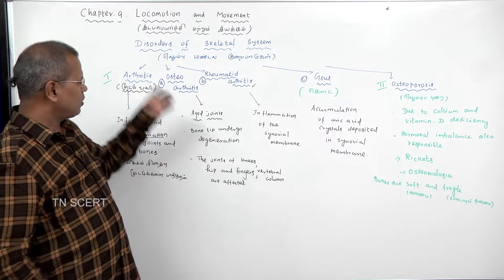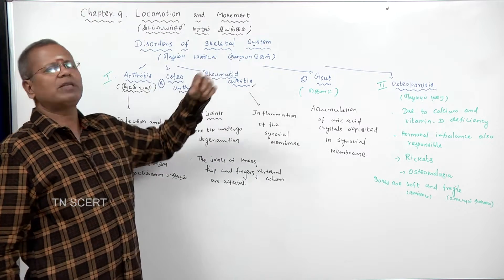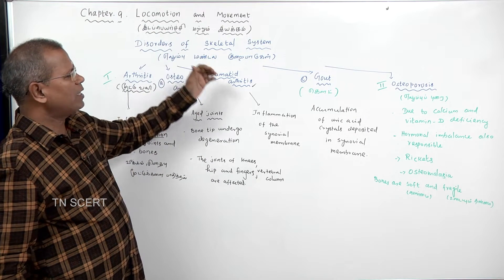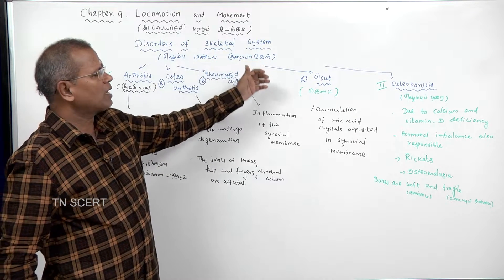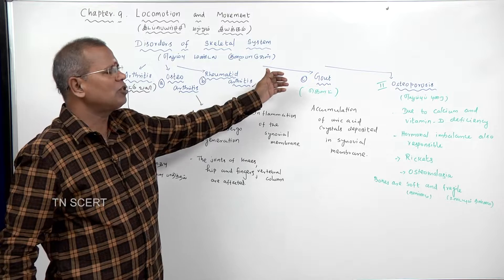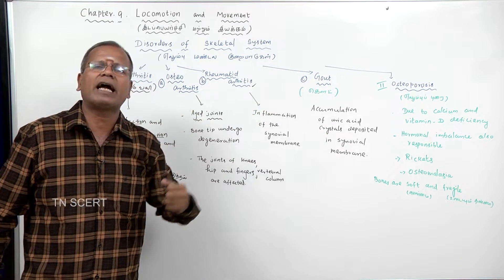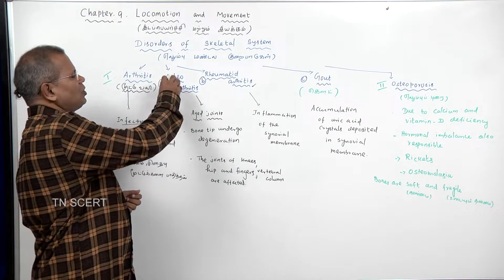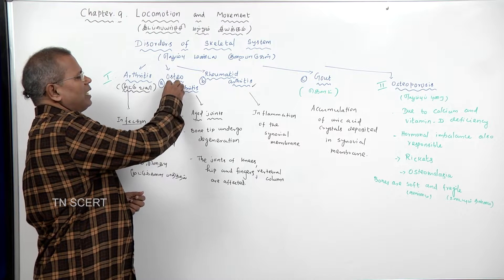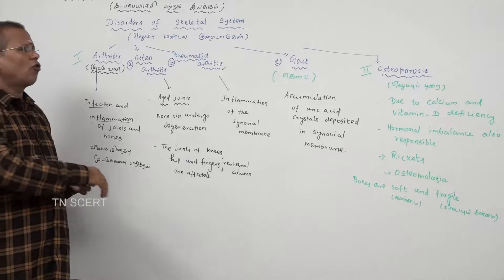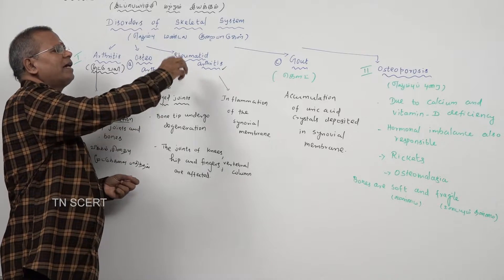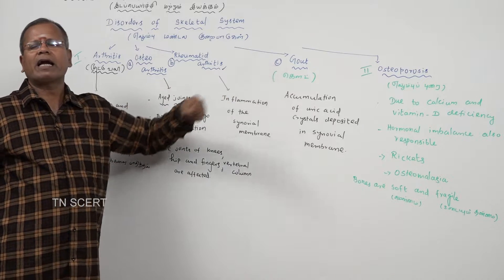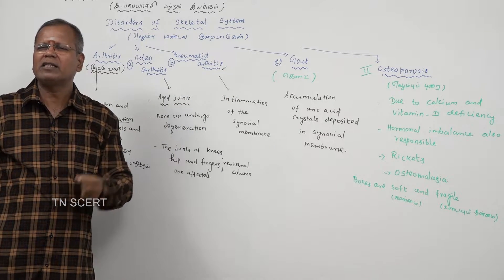This arthritis is of three types, namely: osteoarthritis, rheumatoid arthritis, and metabolic arthritis. Gout as well as infective arthritis is also seen.